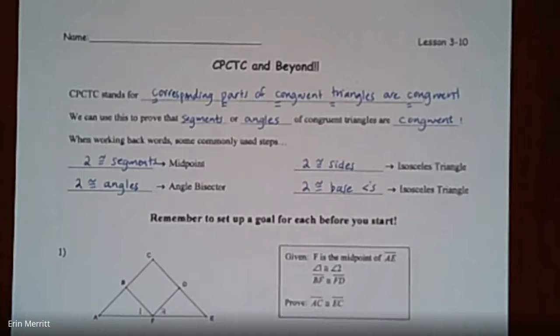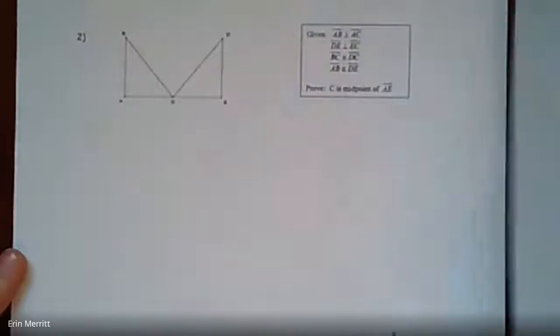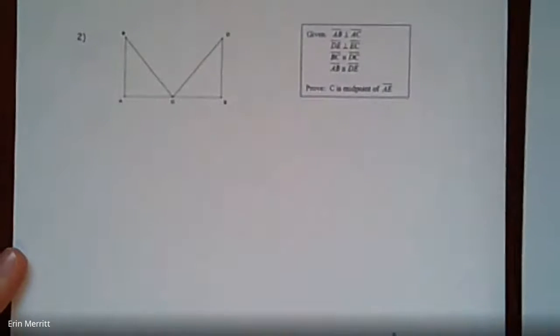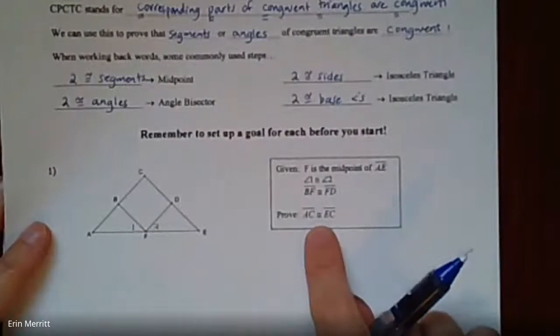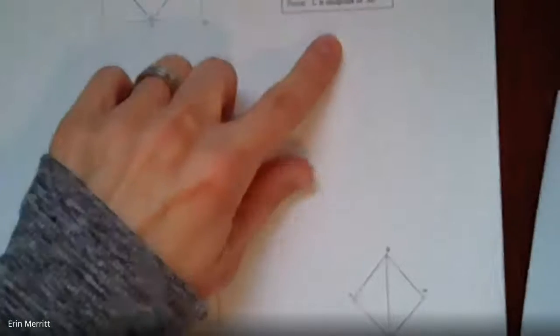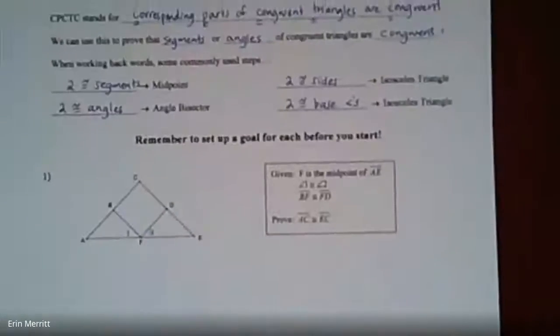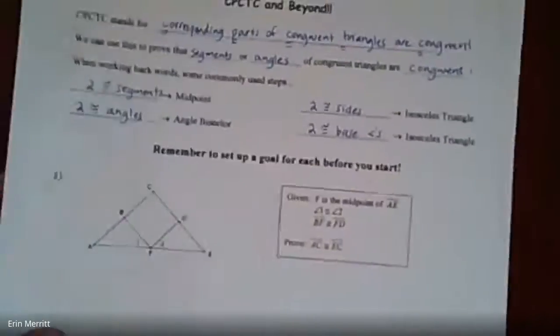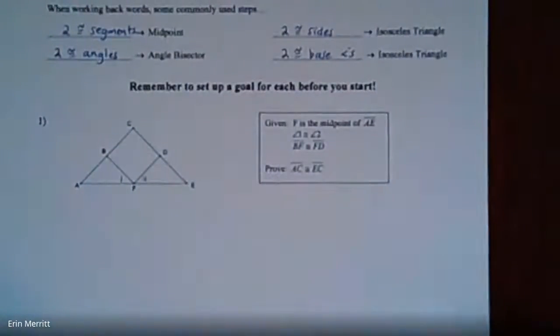There are three proofs in our packet for today. The first one is just proving a pair of segments, but the next two we're going to prove that something is a midpoint and that something is an angle bisector. So the first one kind of primes you for the next two. Let's take a look at this first one together.